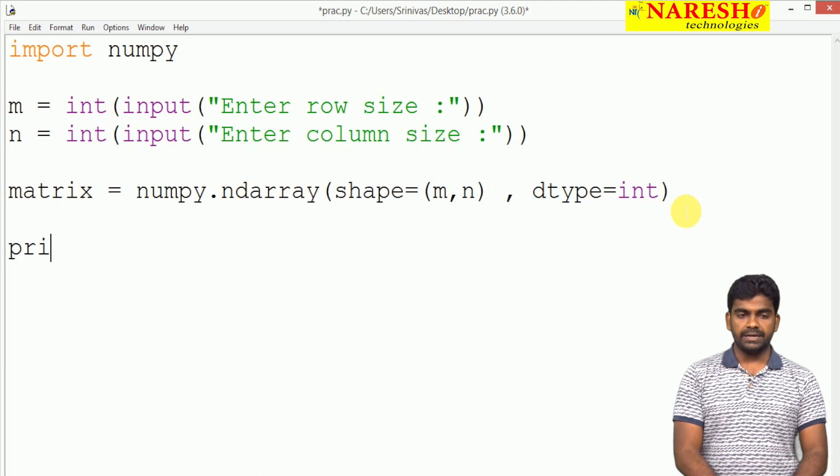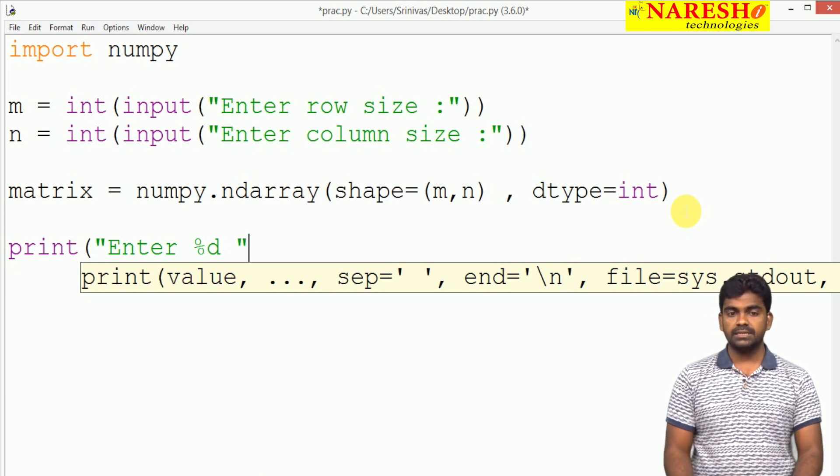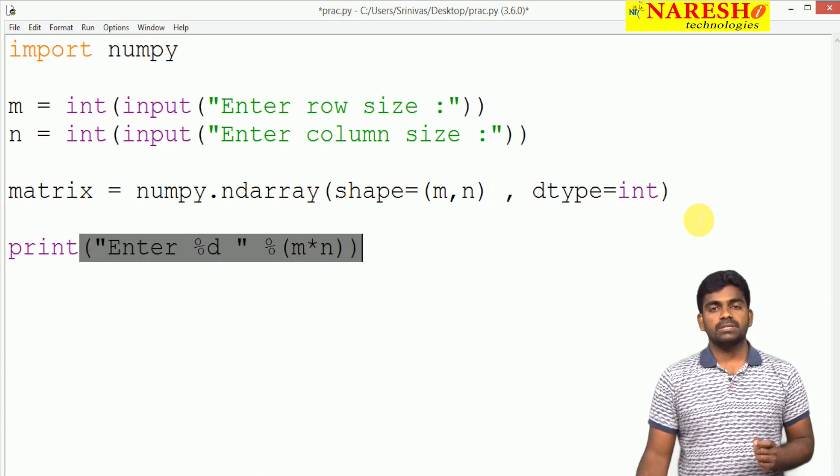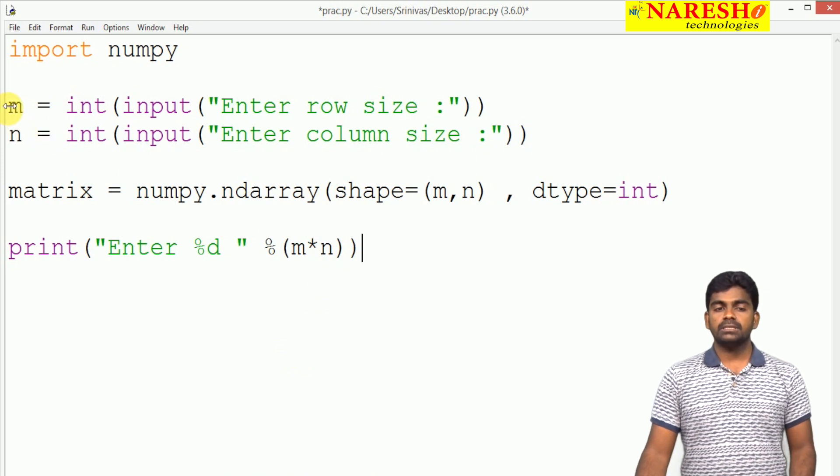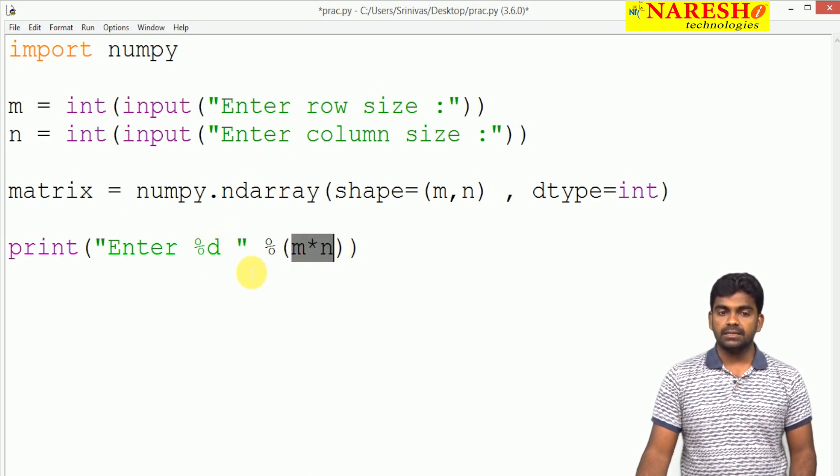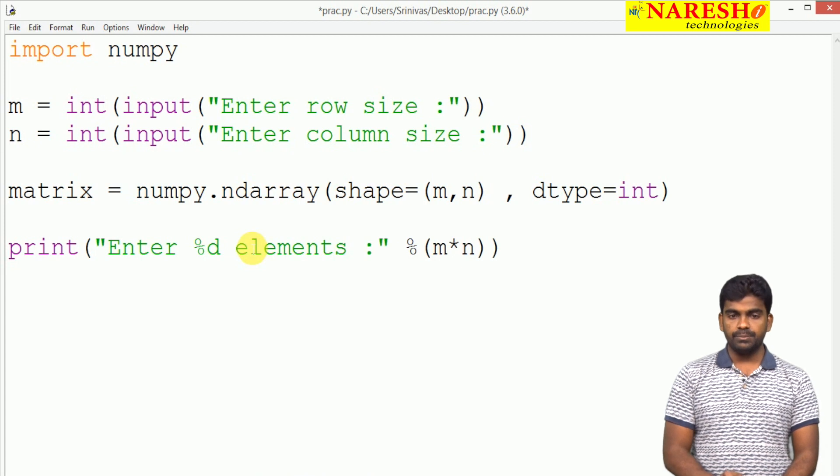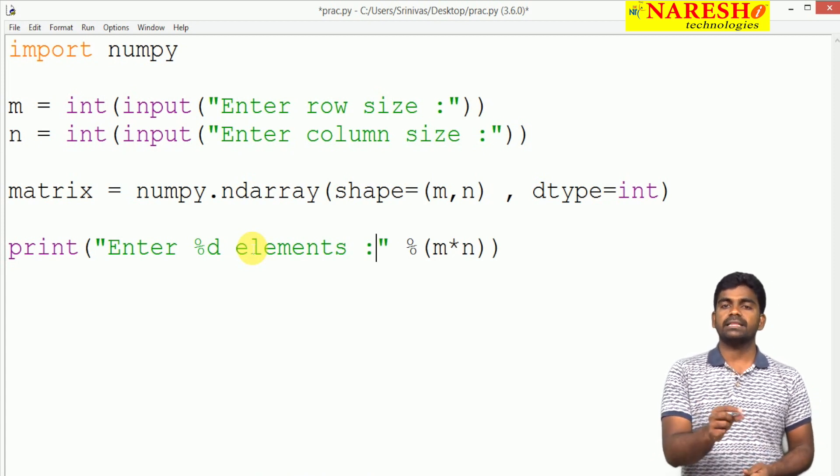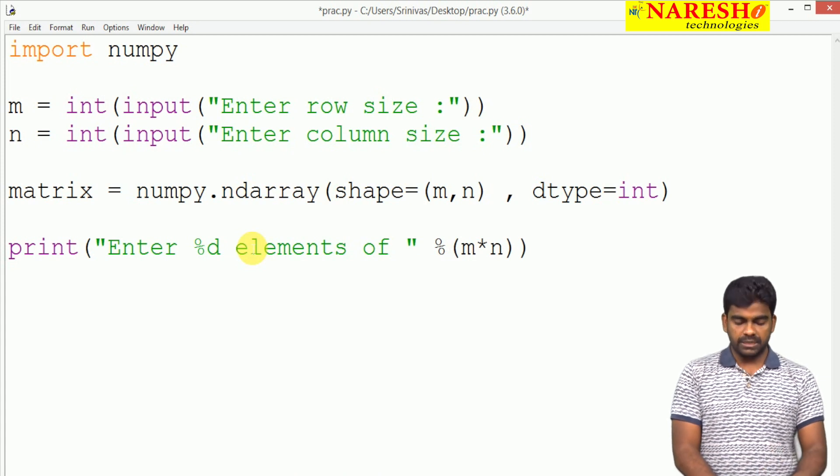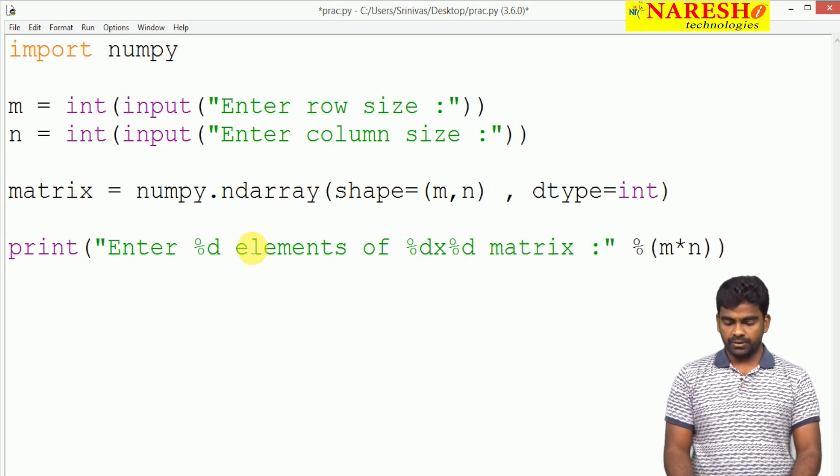So clearly I want to specify: print enter, percentage d. What is that percentage d? That is m multiplied with n, format specifiers. Here suppose m value is 3 and n value is also 3, so 3 multiplied with 3 is 9. Enter 9 elements. Clearly we mention 3 by 3 matrix, 2 by 3 matrix, or 3 by 2 matrix like that. Elements of 3 by 3, percentage d, percentage d matrix.